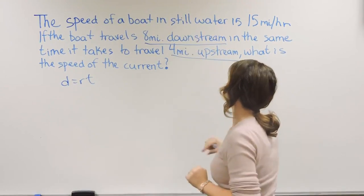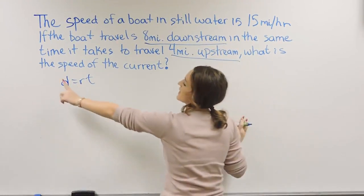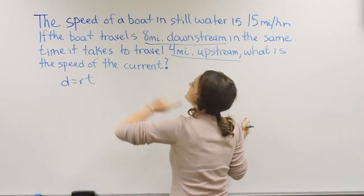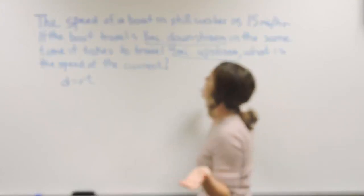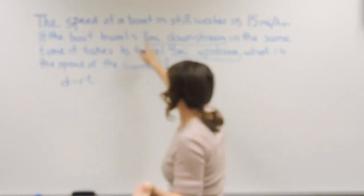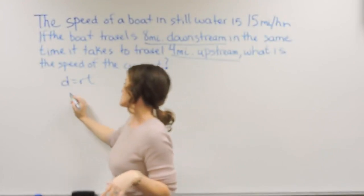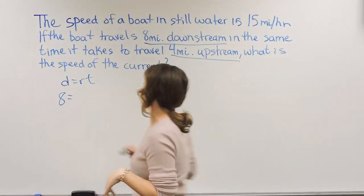So let's first focus on the downstream one. So we need to plug in distance, a rate, and a time as much as we can here. So it gives us the distance. It says 8 miles going downstream. So I'm going to plug in an 8 for the distance.